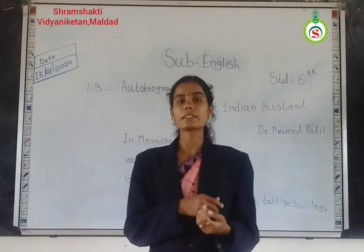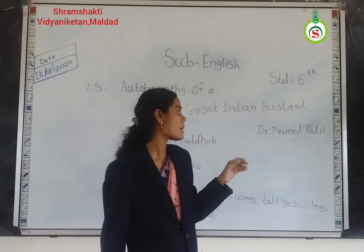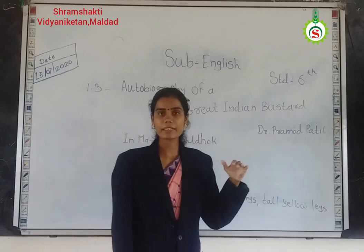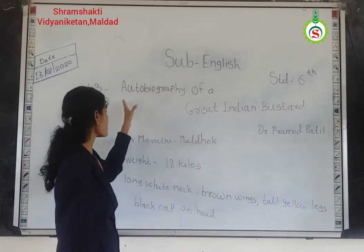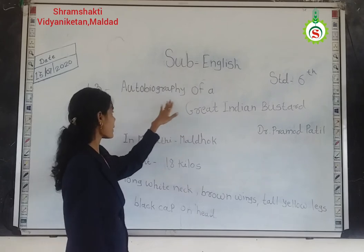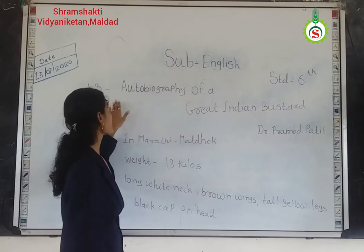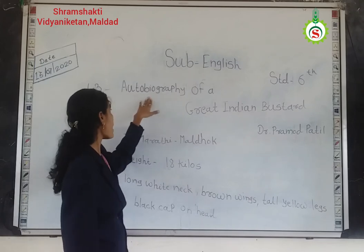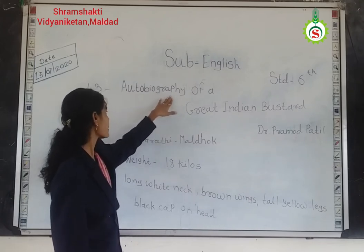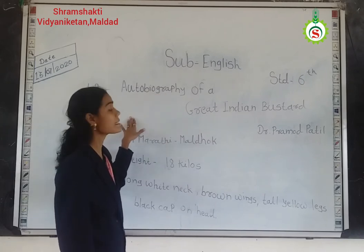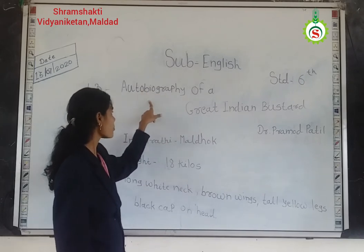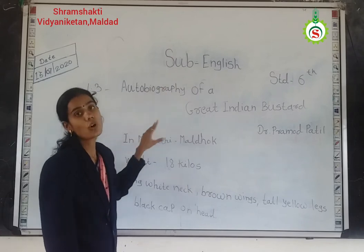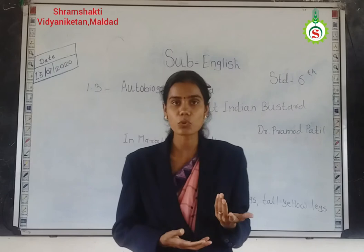In the previous section we saw some information about each bustard. In our previous section we also saw information about the word autobiography. Autobiography means — in this word there are 3 parts: auto, bio, and graphy. Auto means self, bio means life, and graphy means story. So this is a self life story.